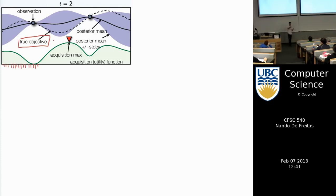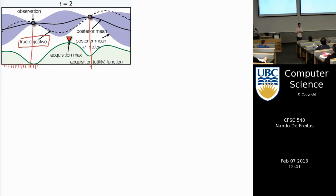All you can do is try one value and see what comes back as the function evaluation. For example, we've tried two values. Based on those two data points I can fit a Gaussian process, assuming the function is smooth. The posterior mean of the GP is the solid line, and the width here indicates the confidence intervals: mu plus sigma and mu minus sigma.